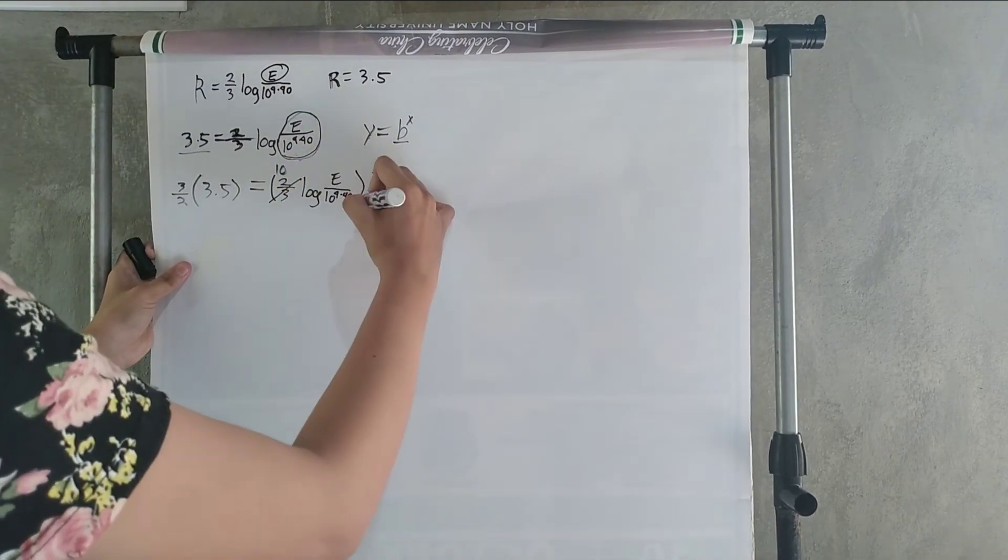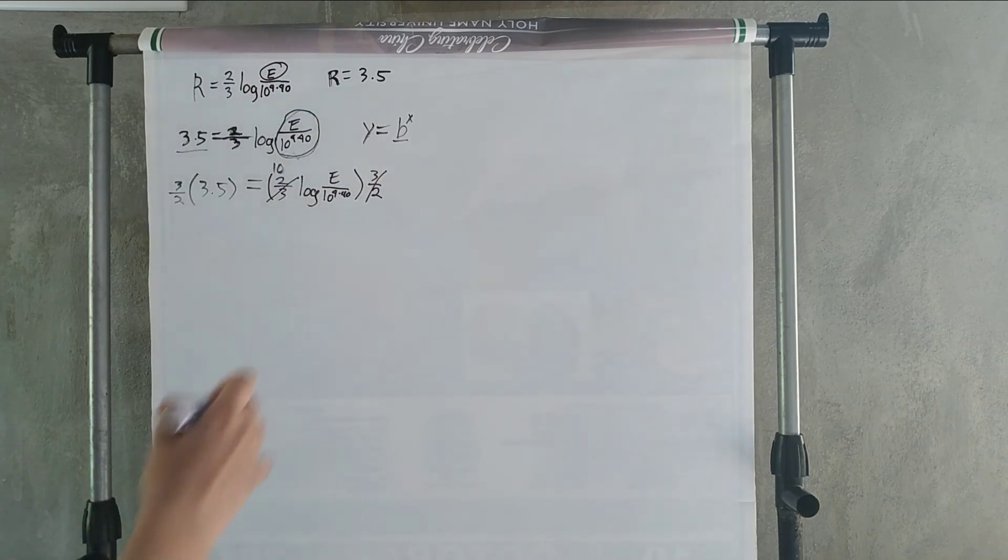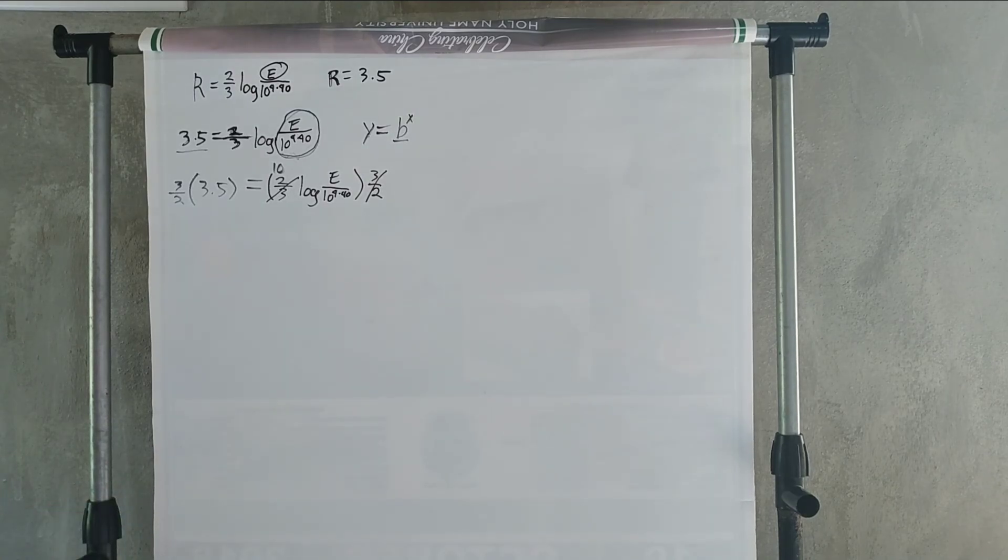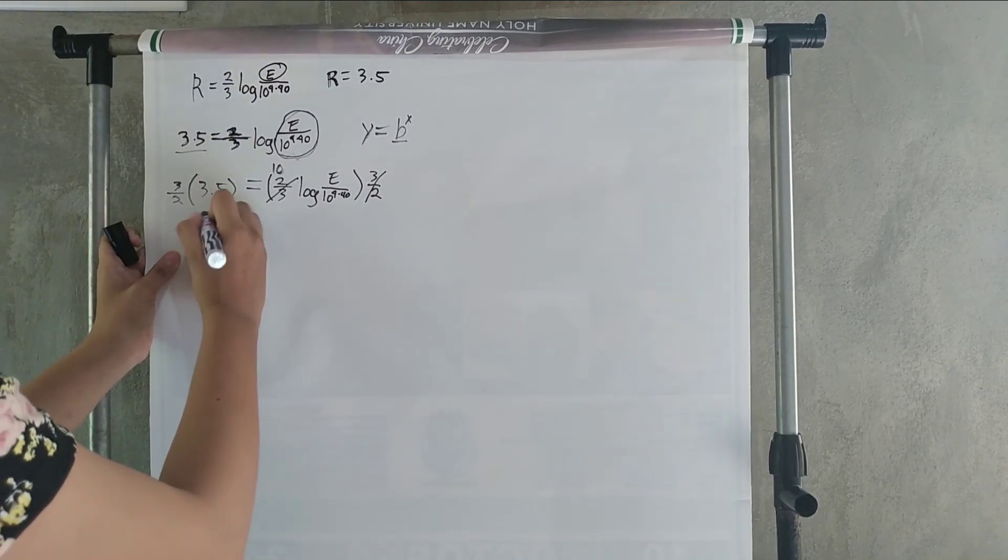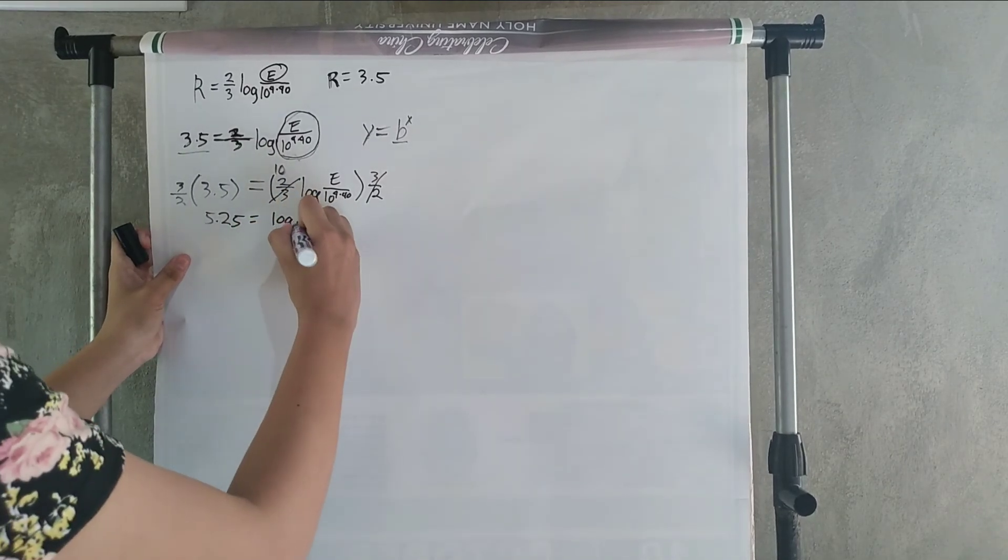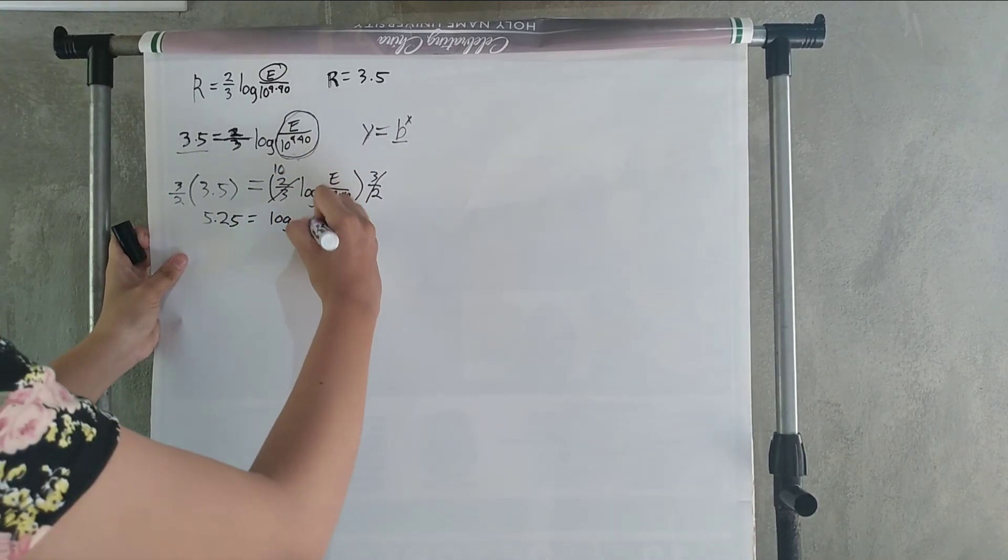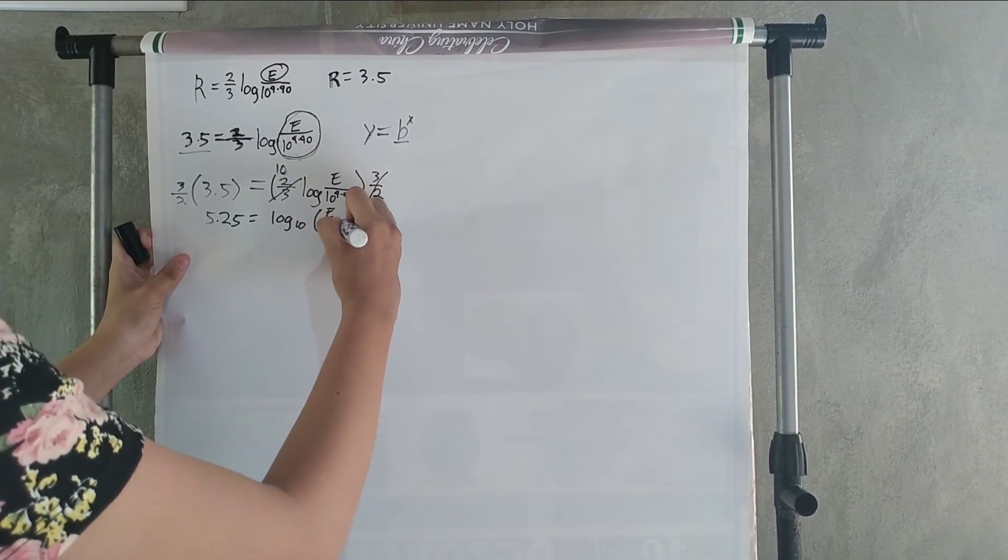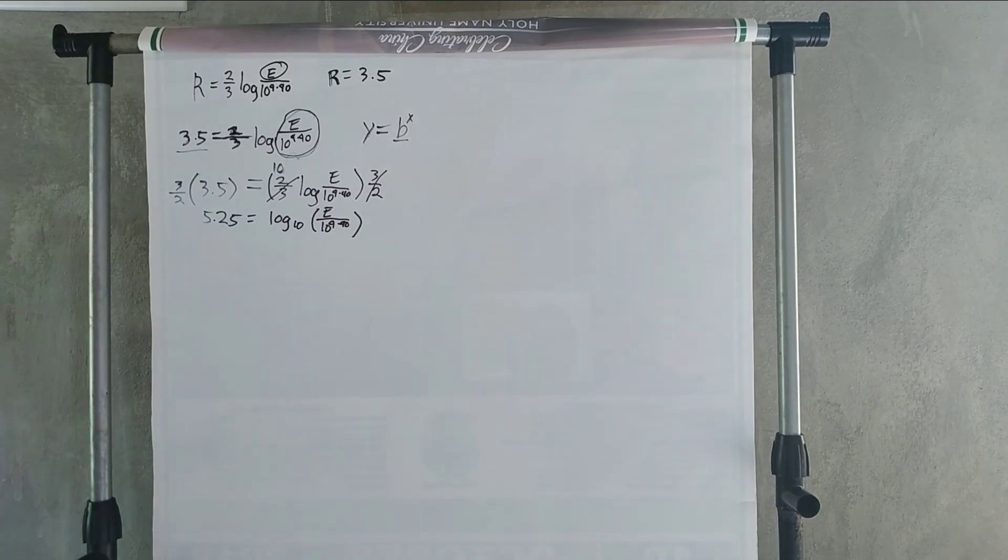Now, this will be cancelled since if we multiply each other, we're going to come up with 1. And we're going to multiply 3 halves to 3.5. Using our calculators, we come up with 5.25 equals log. We're going to write our base 10E over 10 to the power of 4.40.